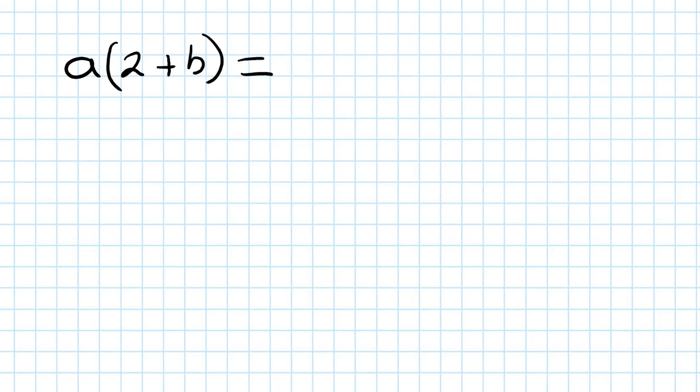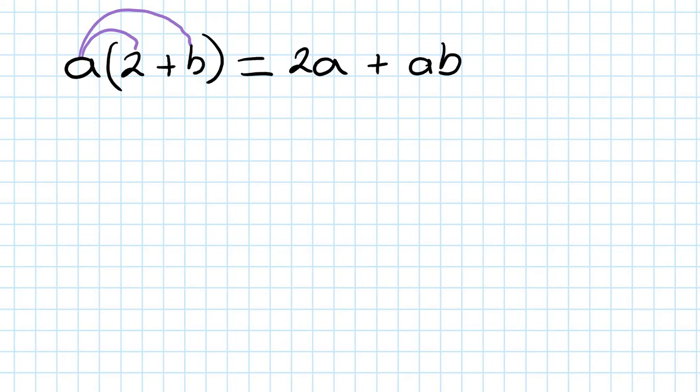Let's say we expand a, open bracket, 2 plus b. So what you do, we're gonna do a times 2 — that's how you expand, or remove the bracket. So a times 2 is 2a, and then you go a times b, which is ab. That's how you expand the bracket, or remove the bracket.